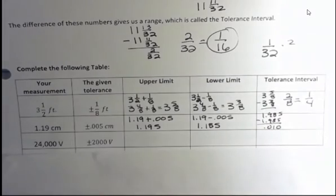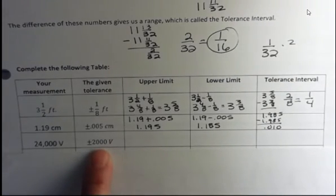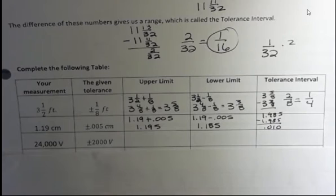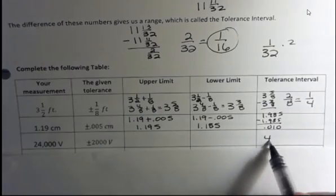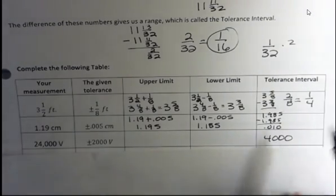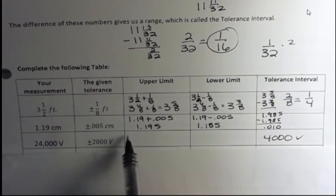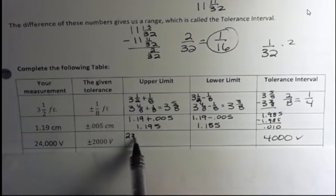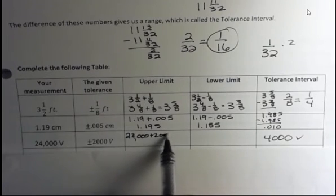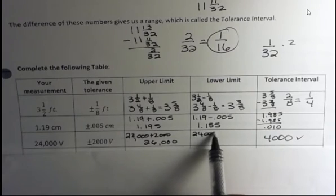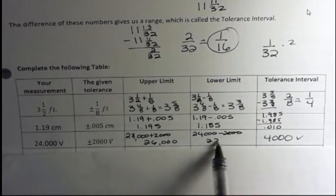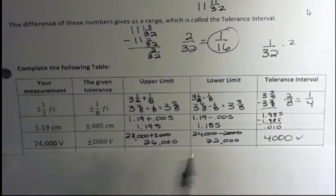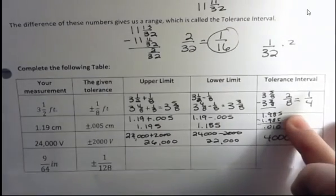So that means what do you think the interval is going to be for this one? Well, we're going to go 2,000 down and 2,000 up. So what's the interval going to be? Right, 4,000 because we're just doubling that. So our interval we know already is going to be 4,000 volts. So all I have to do to find the upper limit is add 2,000 and get 26,000 and then subtract 2,000 and get 22,000. And then I can see 26 minus 22 is how I get the 4. So we can get the upper and the lower by adding and subtracting the tolerance.